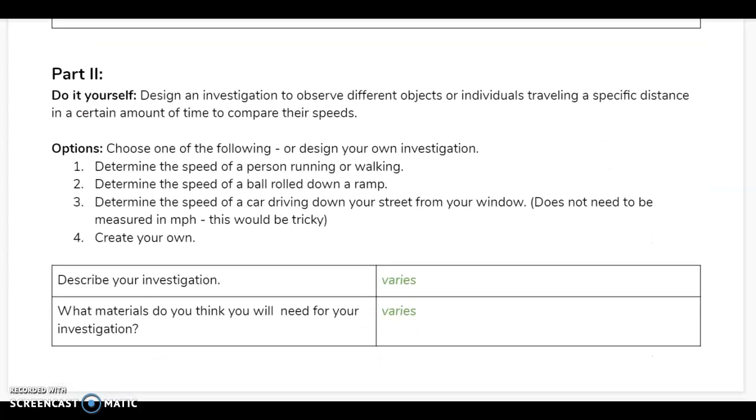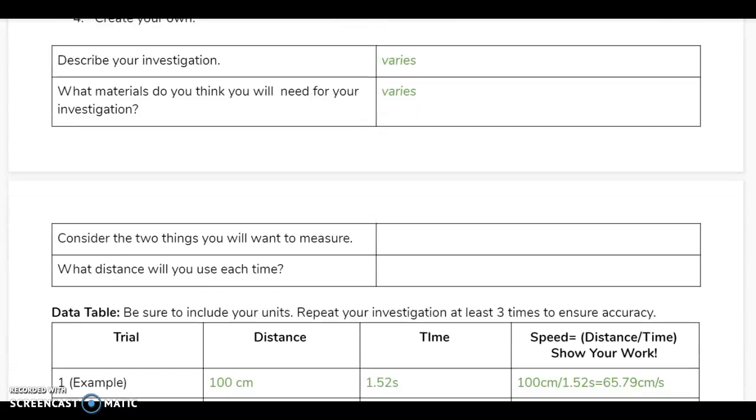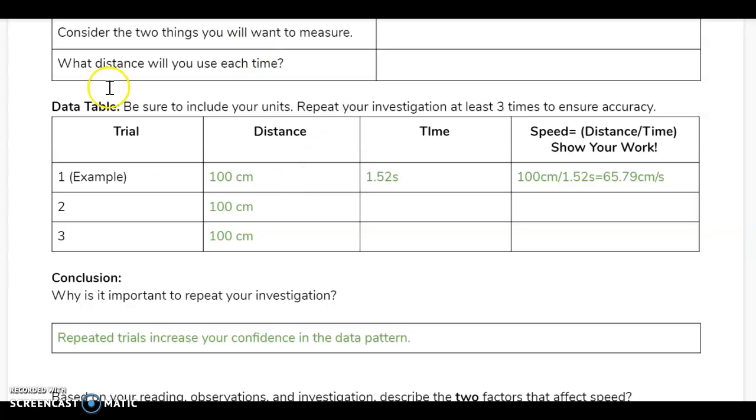In part two we did a do-it-yourself investigation. What we did in the case of period six is we rolled a ball. You might have determined the speed of a person walking or running, a ball down a ramp, or a car, or something else. But for all of them you should have had the same distance in each trial, and then each trial you should have calculated your time. It is very likely that each time would have been different just because you can't roll a ball the same exact speed every single time. There's going to be a little difference, but the really important part was to find your speed.